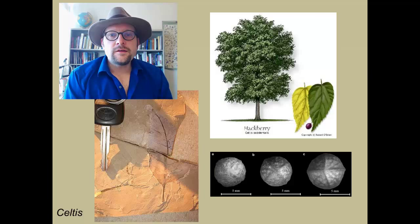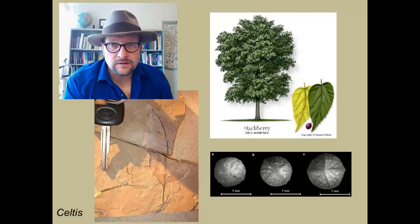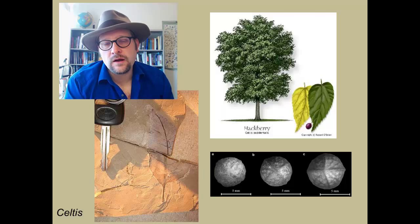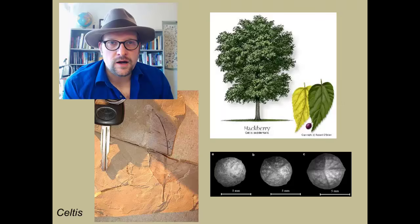Another fossil is Celtis, the hackleberry tree, which is found in many Eocene sites in the Rocky Mountains. It is a smaller tree with serrated leaves and smaller seeds that preserve easily as fossils. Hackleberry grows today in Utah and is often found in urban settings because it is drought tolerant. It is relatively rare in the Green River Formation, but is more common in some of the upland environments during the Eocene.